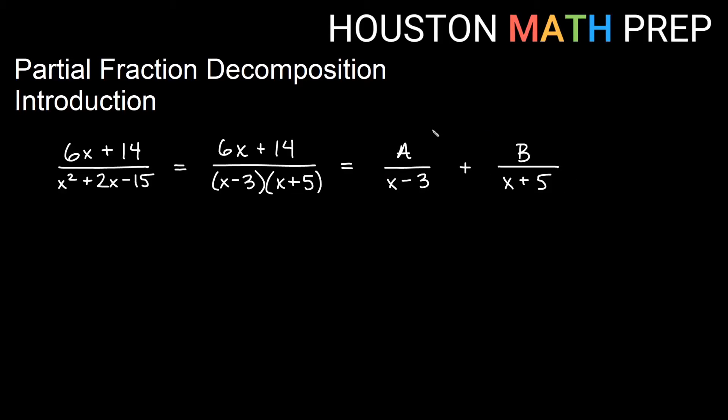We do a similar thing where we need to solve A and B, and we'd get a common denominator just like we did before. Anything missing a factor underneath, we would multiply in. The original has our common denominator because that's what we started with. The A fraction is missing (x + 5) underneath, so we multiply the top and bottom by (x + 5). The B is missing the (x - 3) factor underneath, so we multiply the top and bottom by (x - 3).